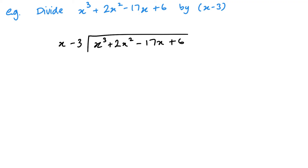My first step is to take my first term and divide by x. So I'm doing x cubed divided by x, and that gives me x squared. I'll put the x squared above the other x squared terms — I think it's just a better way of doing it. The next step is to take this x squared and multiply it by both terms: x squared times x is x cubed, and x squared times negative 3 is negative 3x squared.